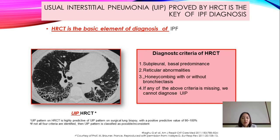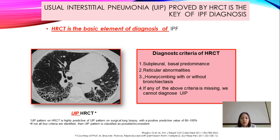Usual interstitial pneumonia (UIP) pattern is provided by HRCT, which is the key to IPF diagnosis. HRCT findings include sub-pleural, basal-predominant reticular abnormalities and honeycombing, with or without bronchiectasis. If any of these criteria are missing, we cannot diagnose UIP.